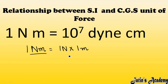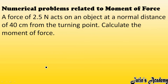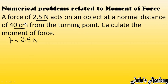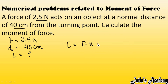Now let's solve numerical problems. Problem 1: A force of 2.5 newton acts on an object at a perpendicular distance of 40 centimeters from the turning point. Calculate the moment of force. Given: Force = 2.5 N, perpendicular distance = 40 cm. We need to convert to SI units first. Since the formula requires consistent units, we convert 40 cm to meters.